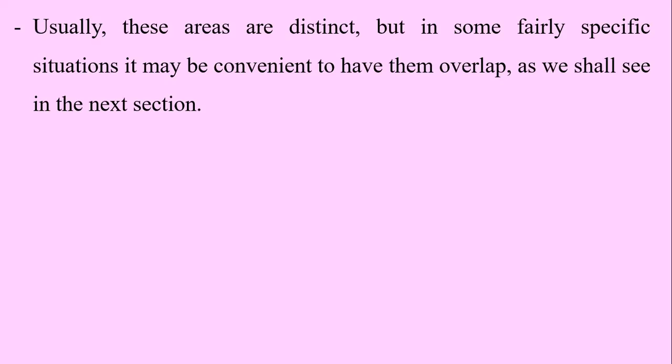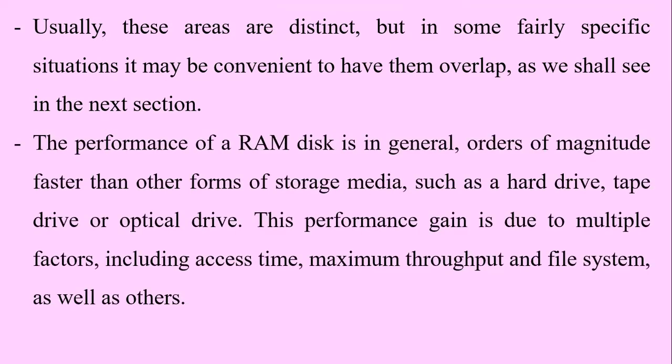The performance of a RAM disk is in general orders of magnitude faster than other forms of storage media such as hard drive, tape drive, or optical drives. This performance gain is due to multiple factors including access time, maximum throughput, and file system overhead.